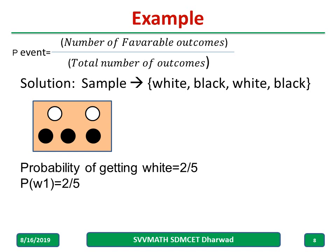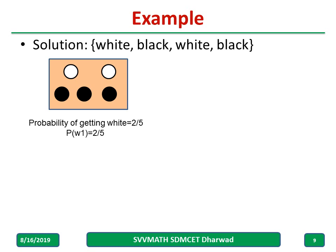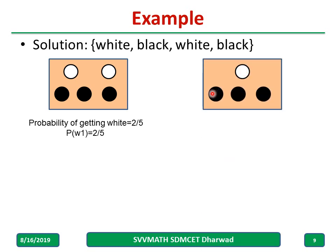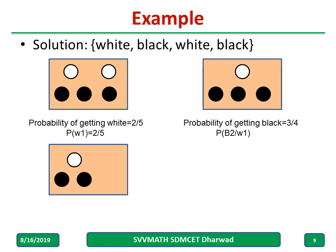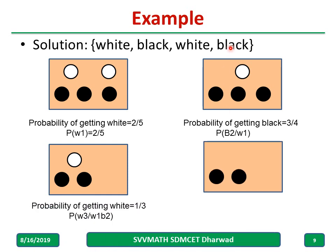After getting 1 white, the remaining balls are 1 white and 3 black. The probability of getting a black now: favorable outcomes are 3, total outcomes are 4, so it is 3 by 4. After removing 1 black, remaining are 1 white and 2 black. The probability of getting the third ball as white: favorable outcome is 1, total outcomes are 3, giving 1 by 3. Now I have 2 black balls remaining, and I want a black ball. The probability is equal to 1.